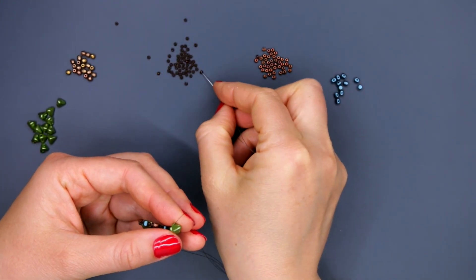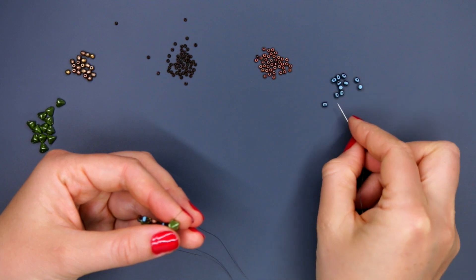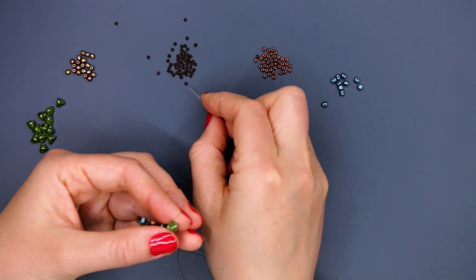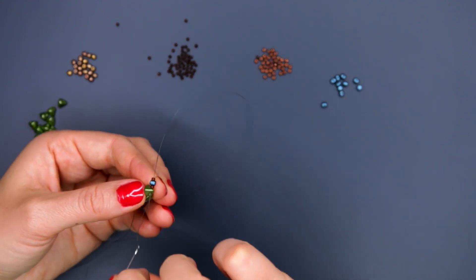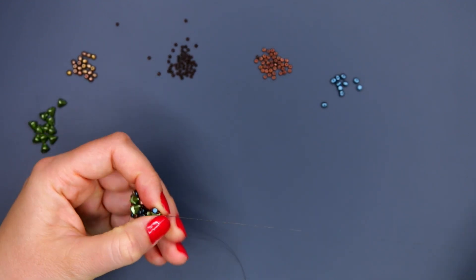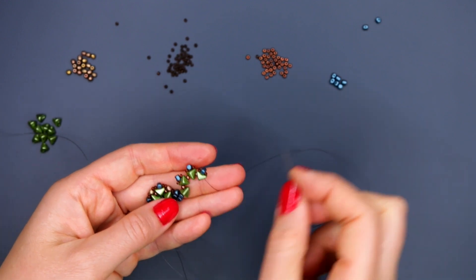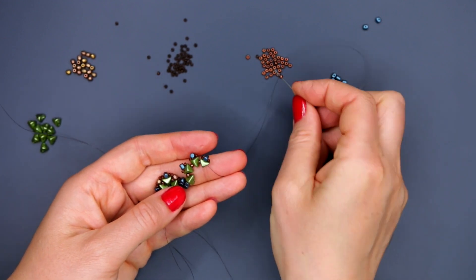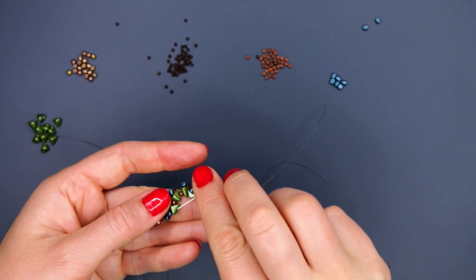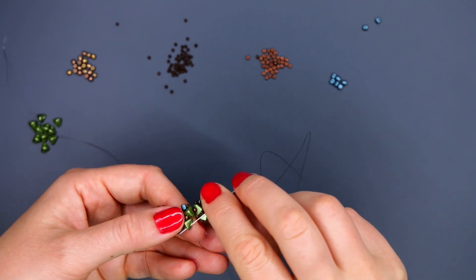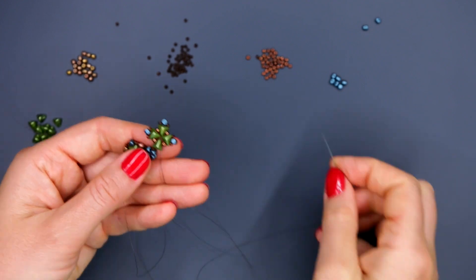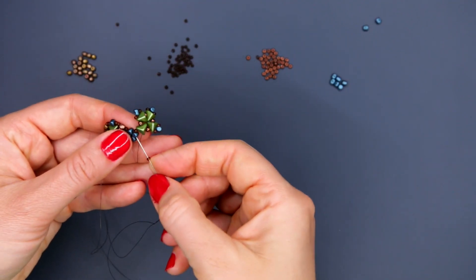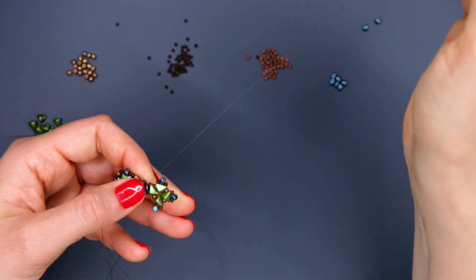Then we continue to weave the element as usual. Seed bead size 10, next keops from the left side hole towards the base. Combination: seed bead size 11, minus, seed bead size 11. Go through second hole of the keops, seed bead size 10, and string like that 4 triangles. Now close the element. String seed bead size 10 and go through the first triangle into the side hole. Add seed bead size 11 and go through minus. The element is closed.